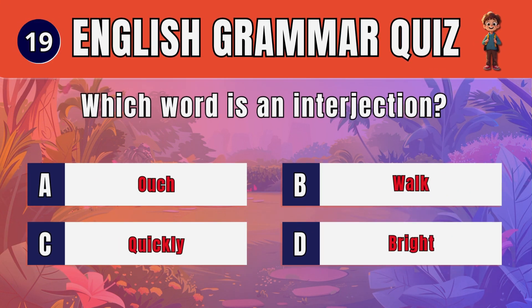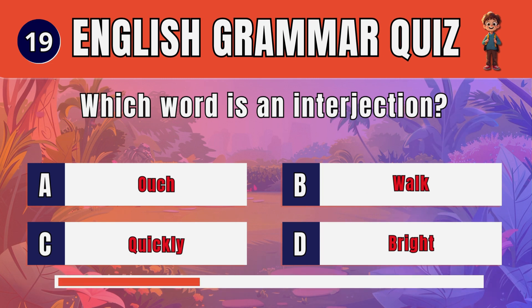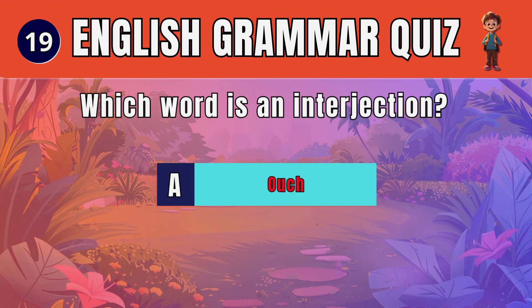Question 19. Which word is an interjection? The answer is: A. Ouch.